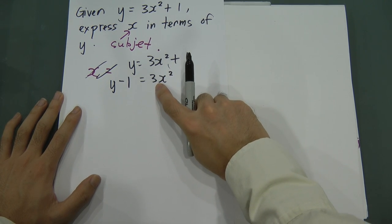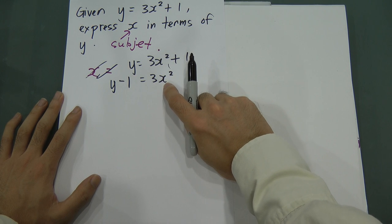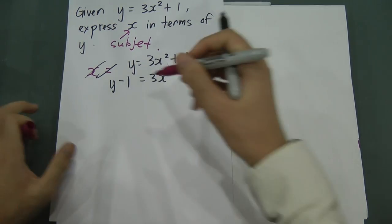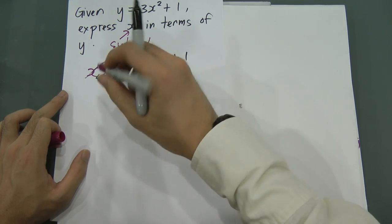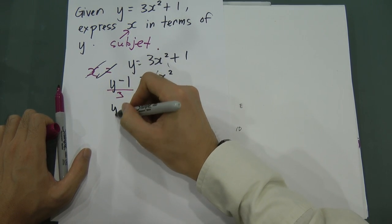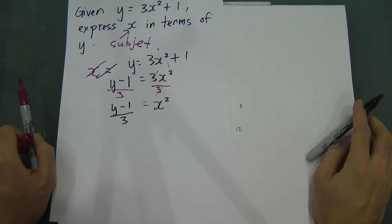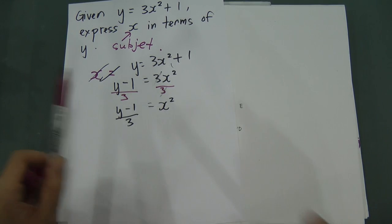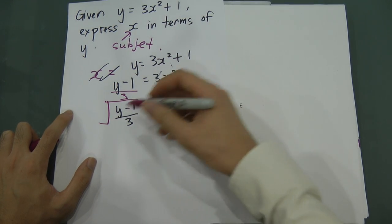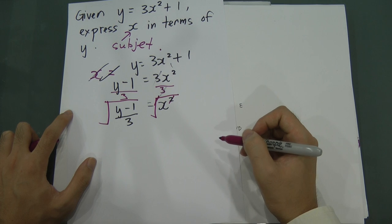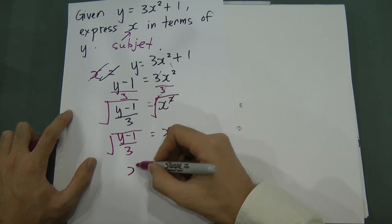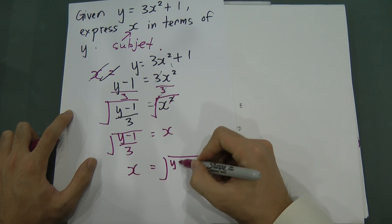Because I want only x, I move the 3 first. The relationship between 3 and x squared is multiplication, so when I move it to the other side it becomes division. I divide 3 for both sides — 3 and 3 simplify — so I get x squared equal to y minus 1 divided by 3. Then to remove the square, I square root the whole thing on both sides. Square and square root simplify, so x equals the square root of (y minus 1) divided by 3.